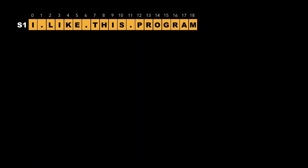Let's look at the approach to solve this problem. We consider a string s1 which is 'I.like.this.program'. We declare variables: length, initialized to the length of the string, a variable r, and another string s2 to store the output string.